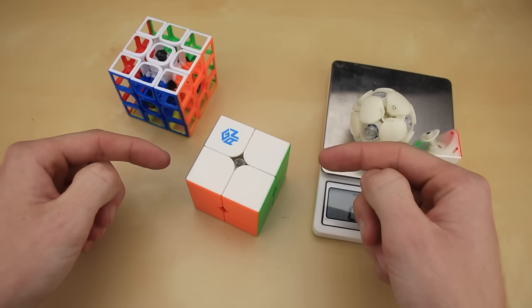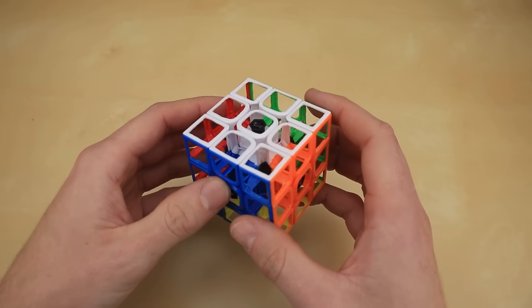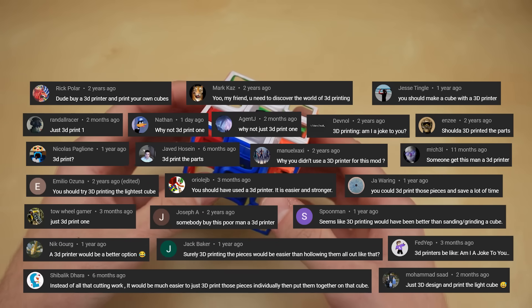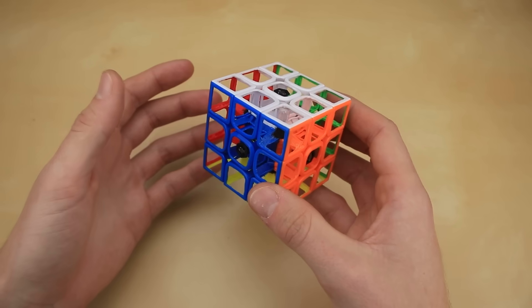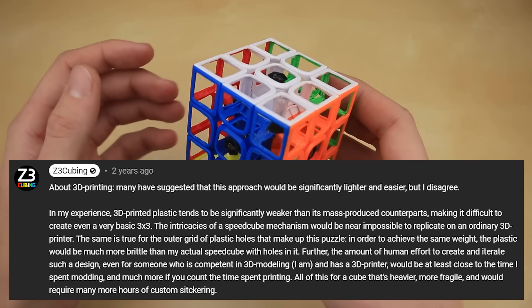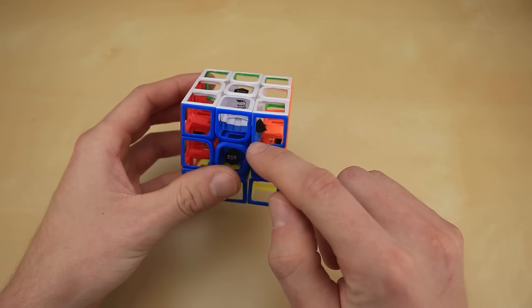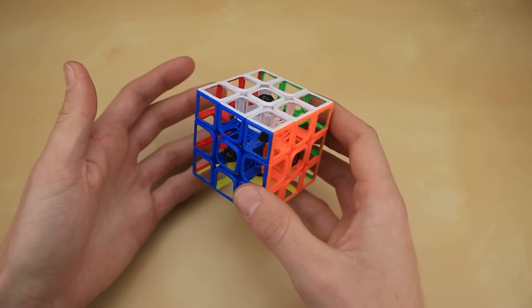So if we want to make the world's lightest 2x2, we're going to have to come up with a new strategy. Now, on my video about this cube, I got a lot of comments asking, why didn't you just 3D print the pieces? It would be a lot less manual labor, and you could probably make the pieces even lighter. Now, at the time, I was pretty hesitant. I had done a lot of 3D printing before, and I was pretty confident that it would be impossible to make pieces this thin and intricate, at least on a standard household 3D printer.